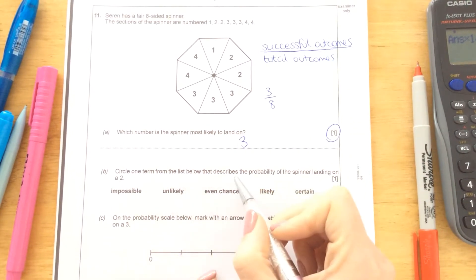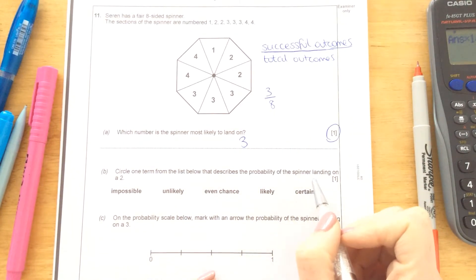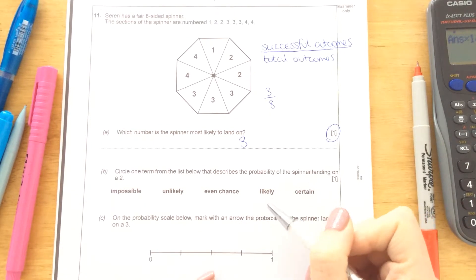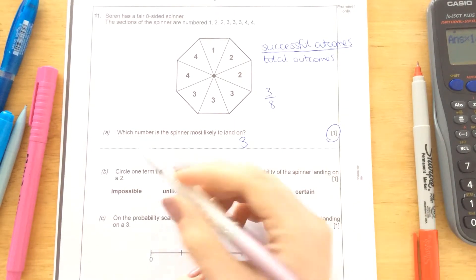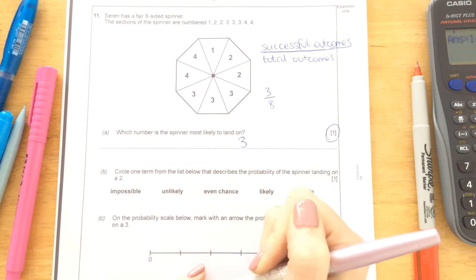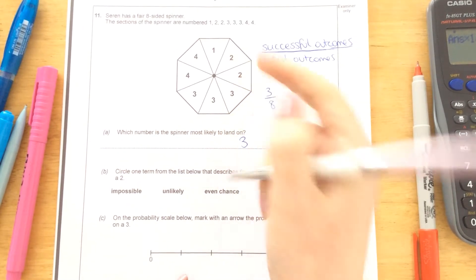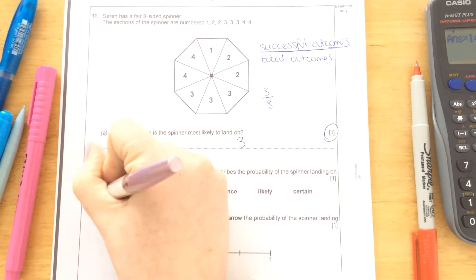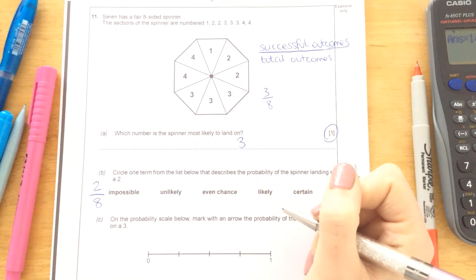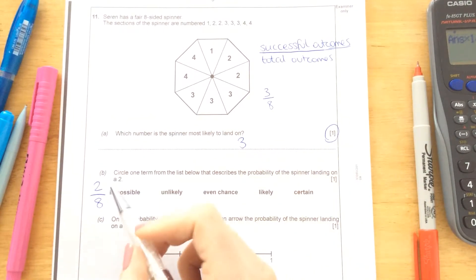And that would be 1 mark. Circle one term from the list below that describes the probability of the spinner landing on a 2. The probability that it lands on a 2, there are 2 twos out of a total 8 numbers.